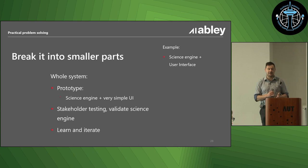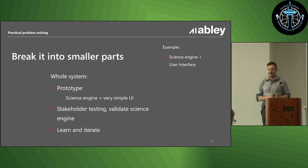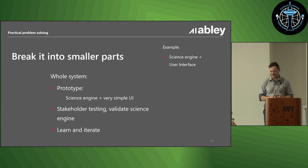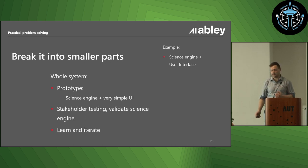That prototype actually ended up being extremely valuable. This was a government department - it turned out we weren't going to be able to meet their time frame. That was a good thing to learn early because we'd done the prototype. I think we got the best outcome and wasted fewer taxpayer dollars. The stakeholder testing allowed us to validate that the science engine was good, but the UI wasn't. So that was the next iteration we were able to go through - we figured that out sooner rather than spending another nine months going down the wrong track.